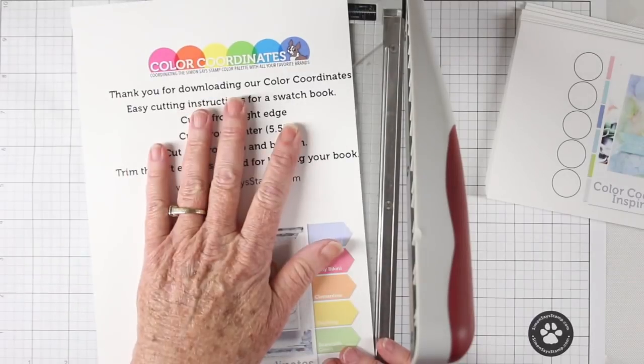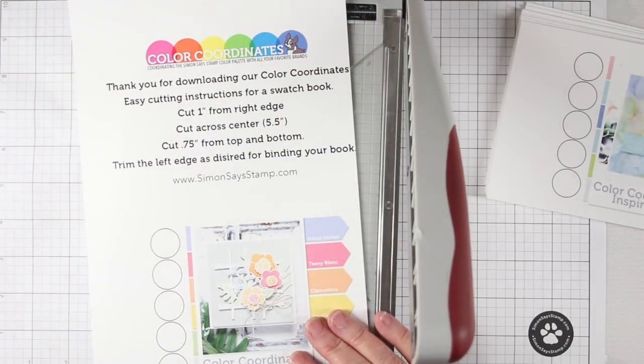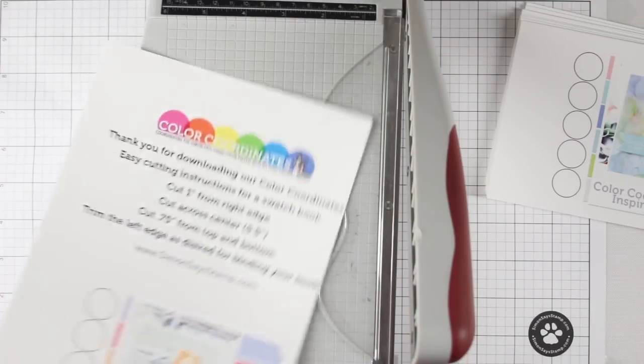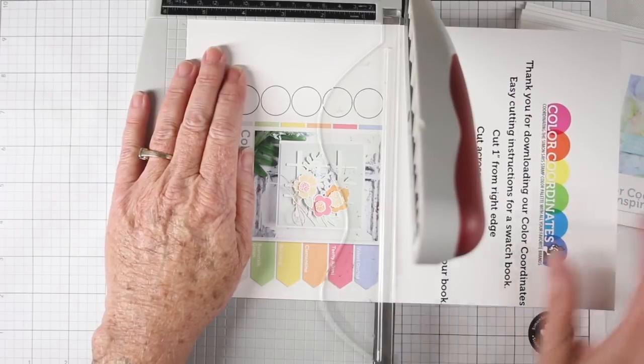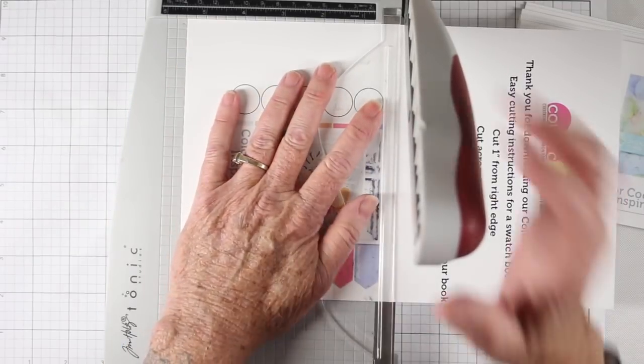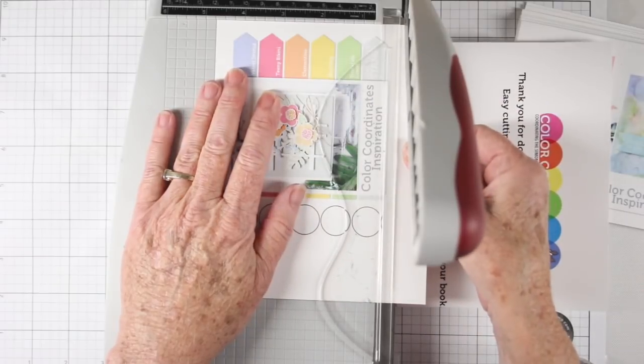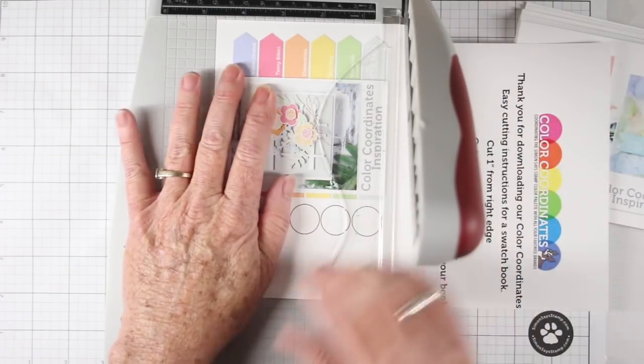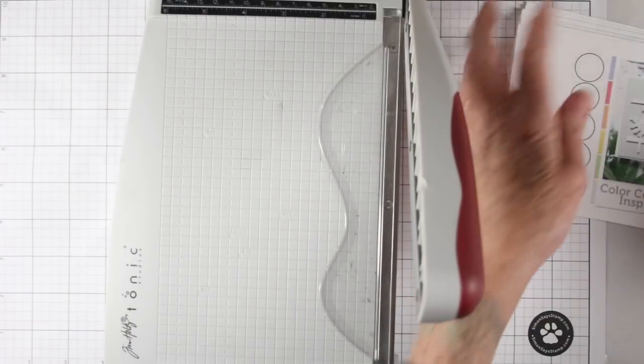On the cover sheet I have some instructions for you to follow and I have cut off one inch from the right side and a half inch from the left side. Next I will put this into my trimmer and cut this from the bottom at five and a half inches. From there I'll turn this around and cut three quarters of an inch off the bottom and that will leave me with a four and three quarters by seven inch sheet.